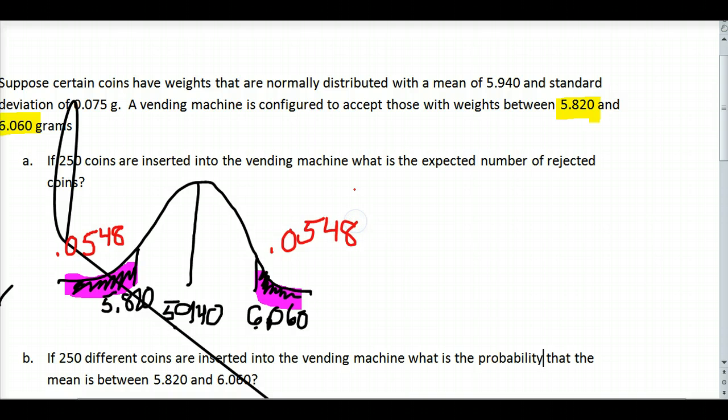So I'm going to go ahead and write that value down and add the two of them together to get the proportion that are rejected. So 0.0548 plus 0.0548 gives me about 10% of these are rejected, 10.96. I do have 250 coins being inserted into my vending machine. So we'll multiply by 250 and see that 27.4, or as it tells you to round to the nearest integer, about 27 are rejected.